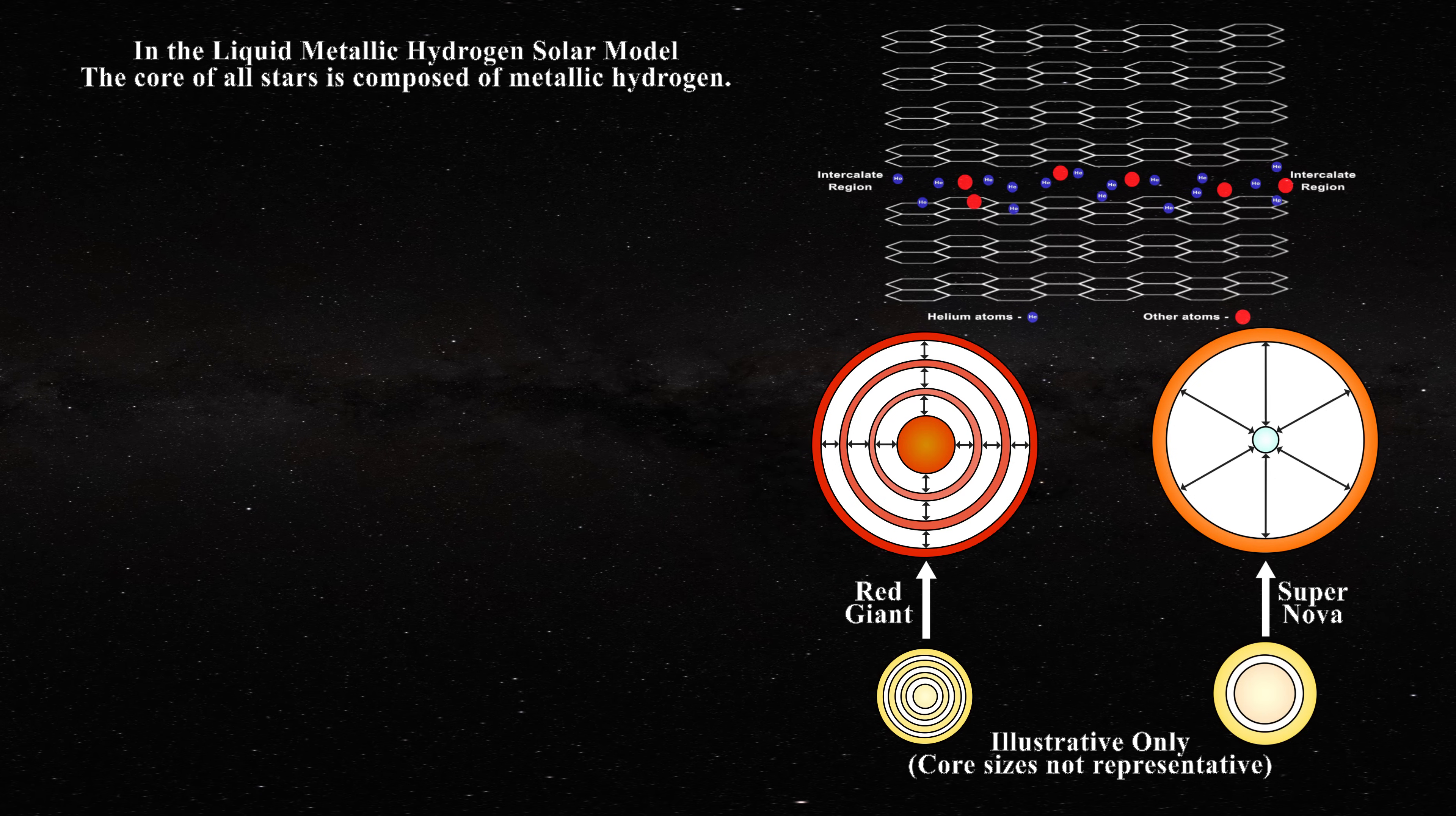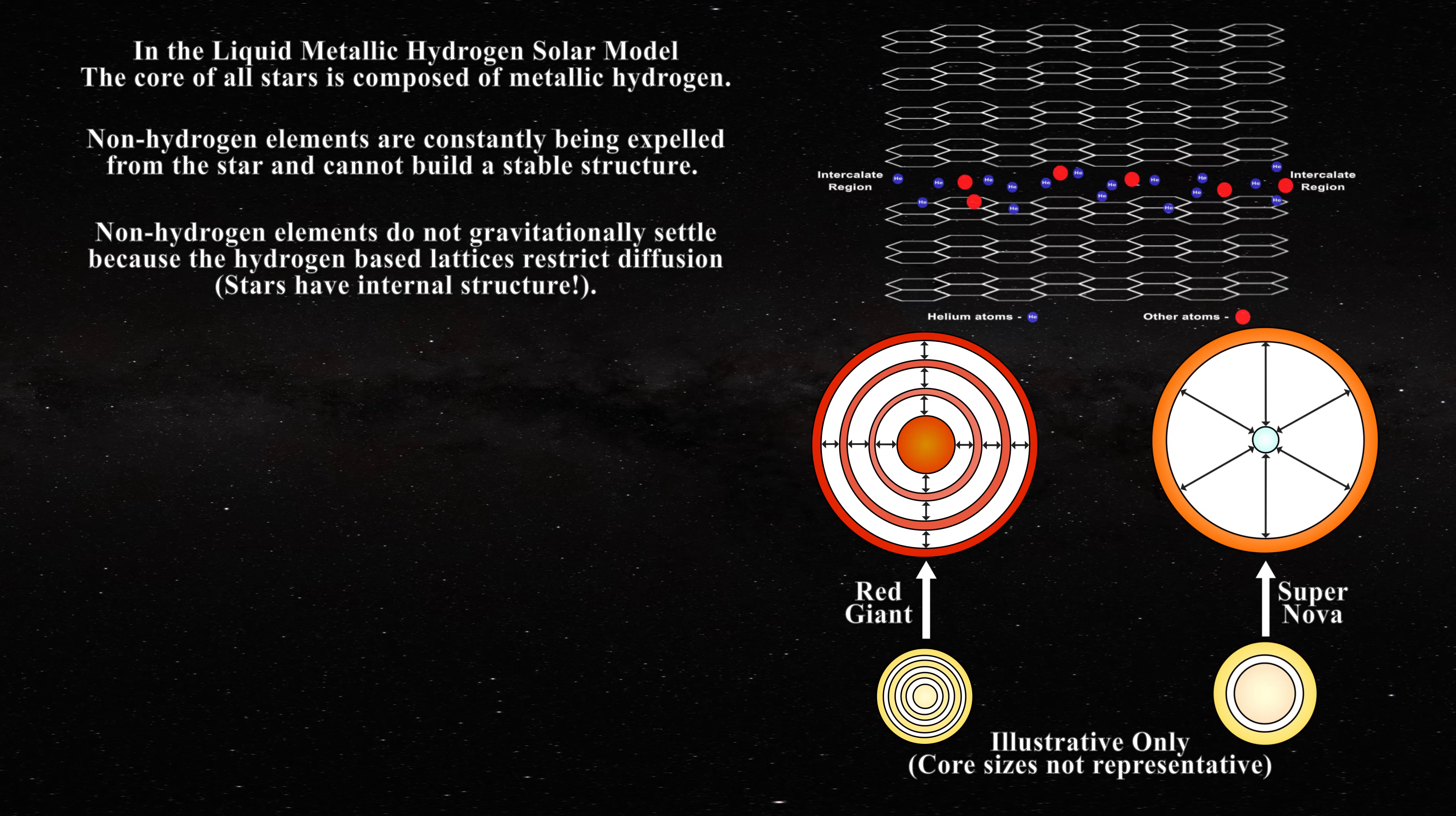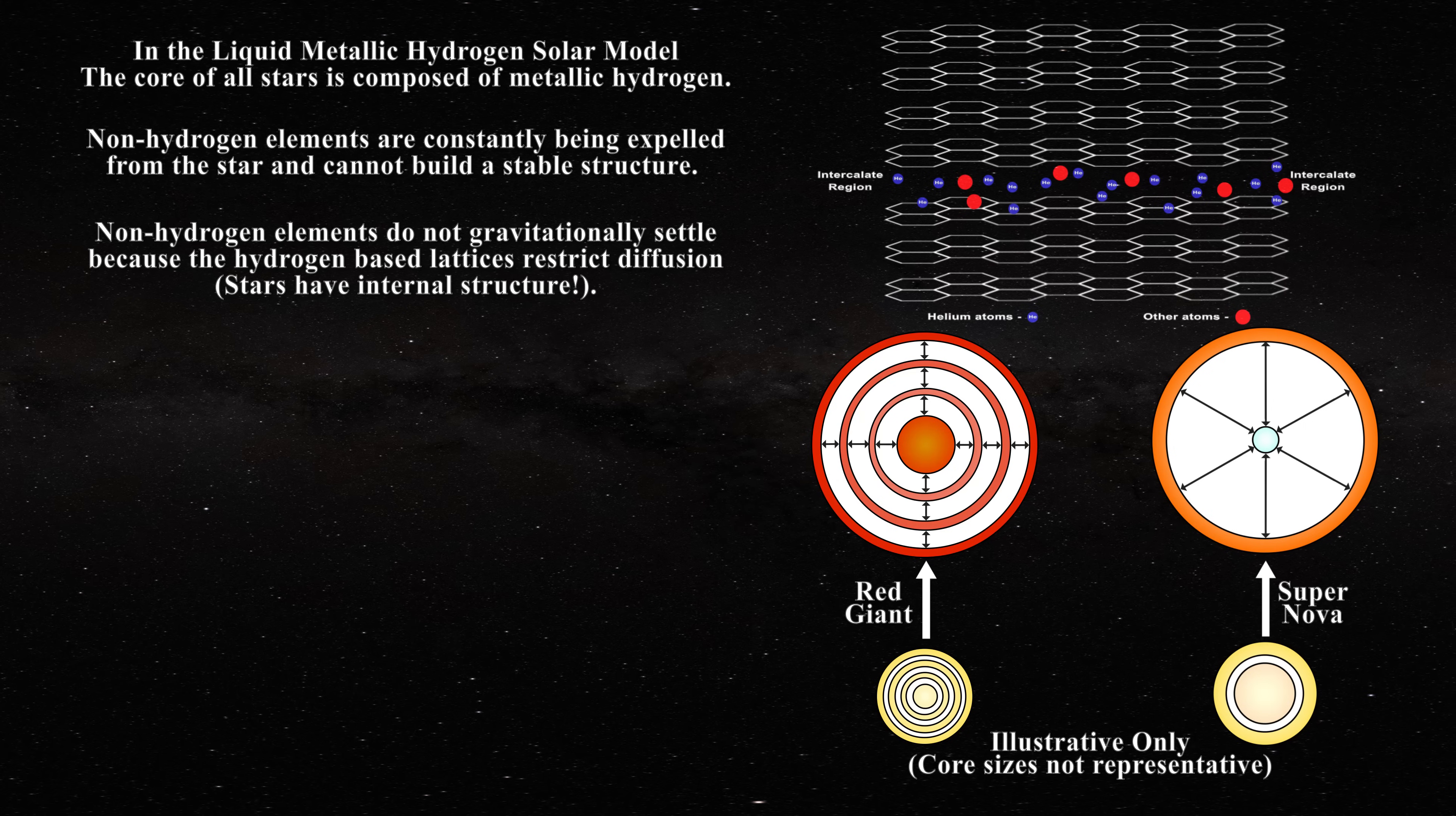The cores of stars are made of hydrogen for two reasons. First, non-hydrogen elements are constantly being expelled from the star and are not permitted to build up in a stable structure. Secondly, non-hydrogen elements do not gravitationally settle to the center of the star because the presence of the lattice structure restricts diffusion of these elements. Gravitational settling is therefore prevented.